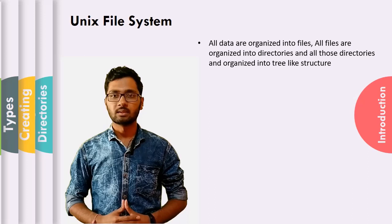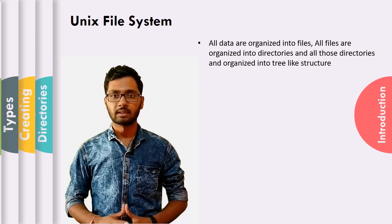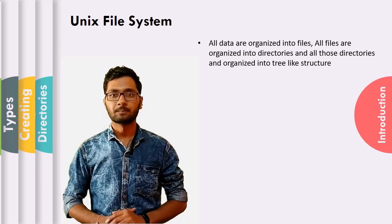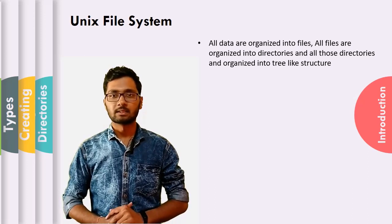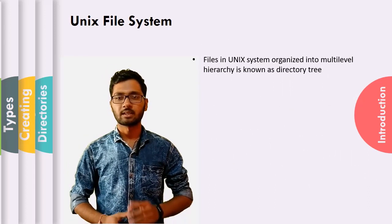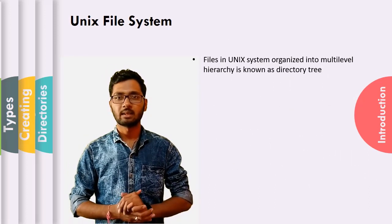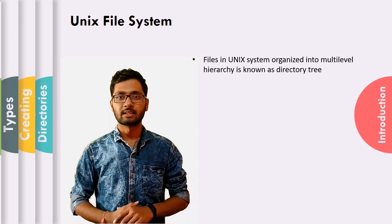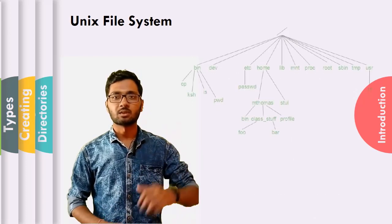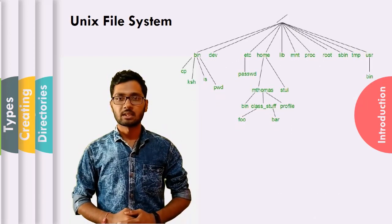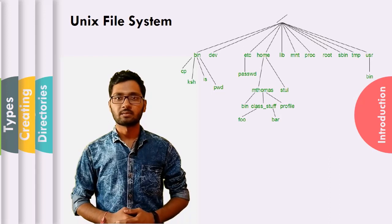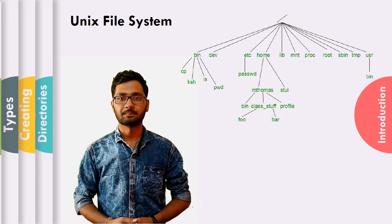All data in UNIX systems are organized into files, and files are organized into directories. Those directories are organized into a tree-like structure — a multi-level hierarchy known as directories. This is the representation of directory trees, in which slash is the root directory and other files are descendants of root.